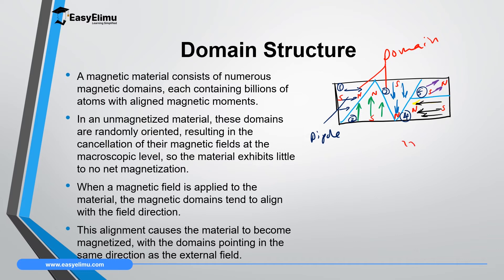Since the arrow represents the north pole and the tail represents the south pole, we can write the polarity of each domain. This material — let's call it iron — does not have a common axis for north and south poles. Domain four, facing left, cancels out with domain one facing right. Domain two, facing up, cancels out with domain three facing down. Therefore the resultant magnetic effect in this magnetic material is zero, giving it no ability to attract other magnetic materials.